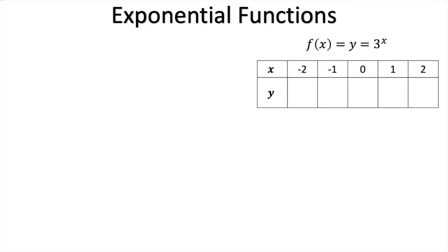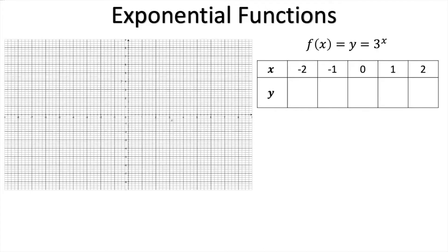Just like we've always done when we don't know the shape of a graph, we pop down our table, get some grid paper, and we get ready to draw. So let's substitute x equals negative 2 into the function and we get 3 to the power of negative 2. Hopefully you remember your exponential laws and you'll get 1 over 9. If not, use your calculator.